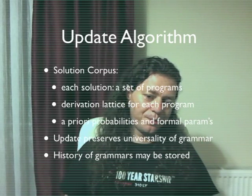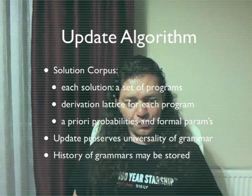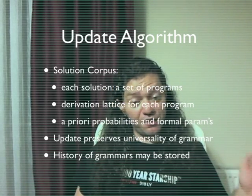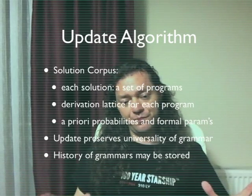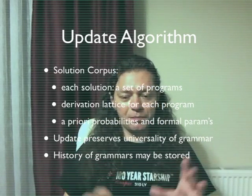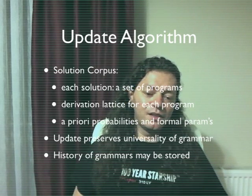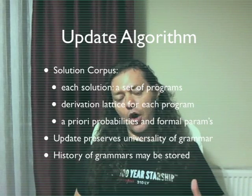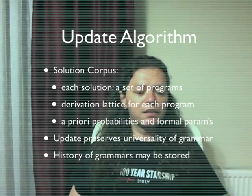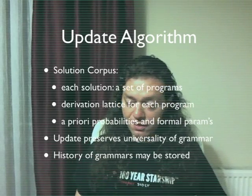Update algorithm. To execute the update algorithm, we need a solution corpus. This includes each solution, which is a set of programs as previously mentioned, and the derivation lattice for each program, so we have the complete information for the derivation of that particular program. We have a priori probabilities and formal parameters for each solution program. The update preserves the universality of grammar, so levin-search will still be bias-optimal. History of grammars is stored so that you can make use of all of them or backtrace and see where it went wrong.